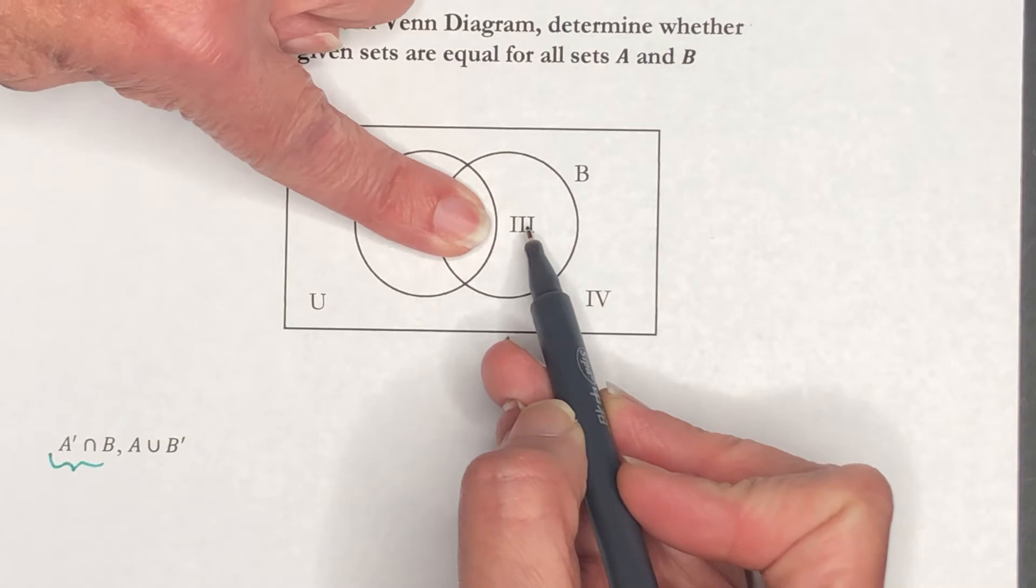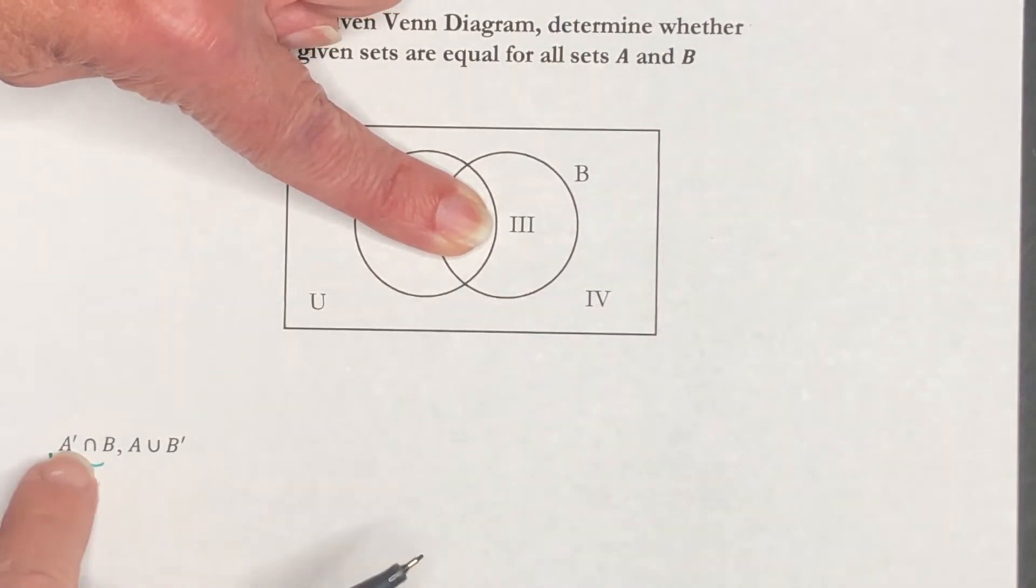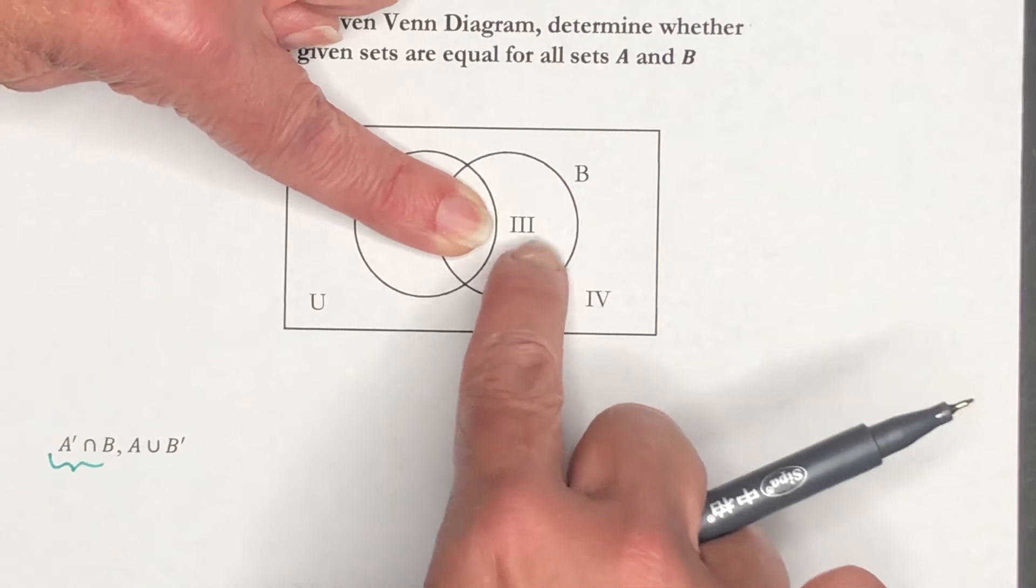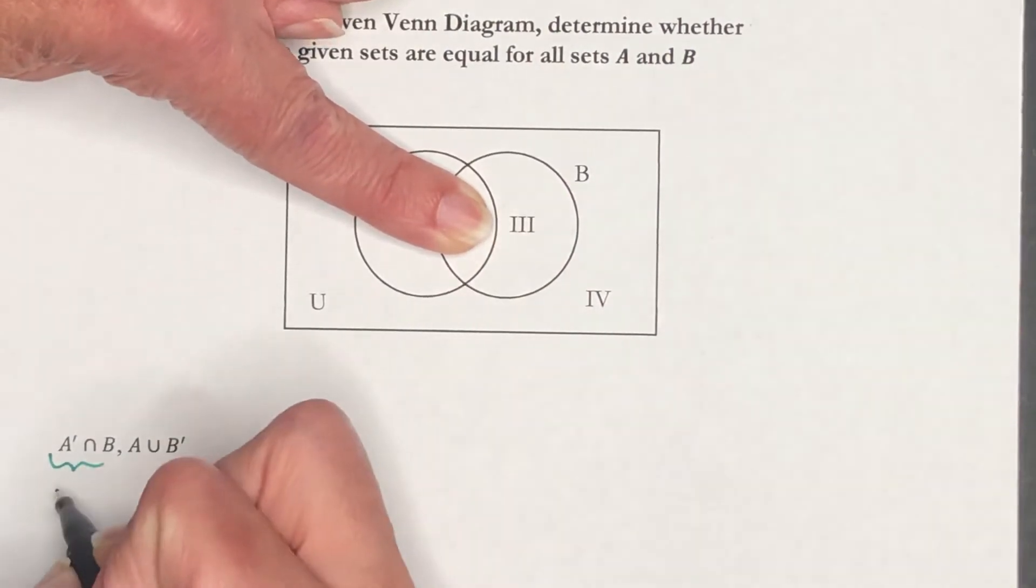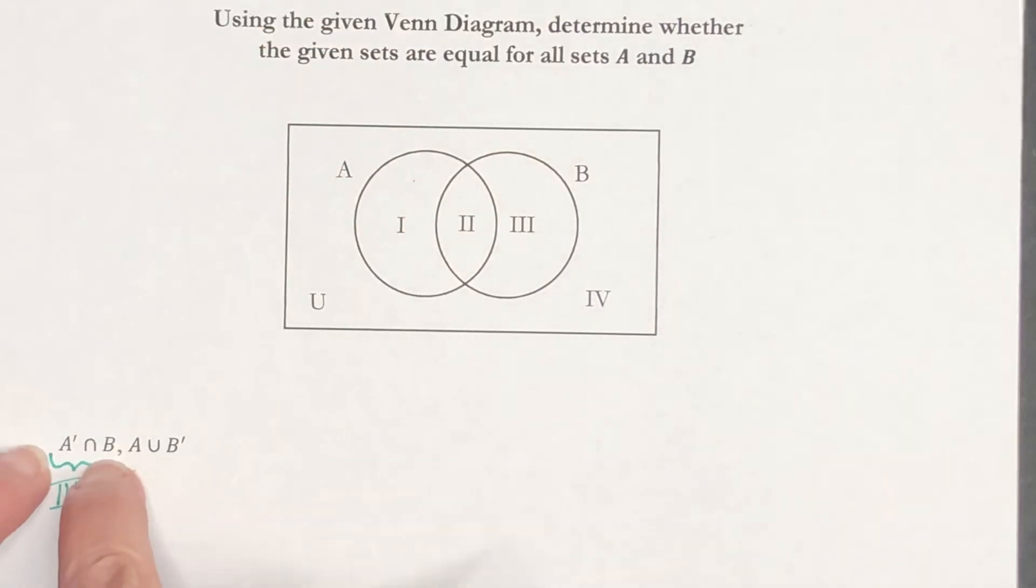Then you add the complement of A, which is here, so it's regions 3 and 4, and we want to intersect that with B. So we want to know what the complement of A has in common with B, and the only thing they have in common is region 3. So the answer to this particular intersection would be region 3.